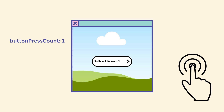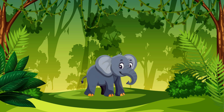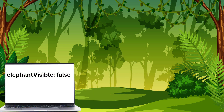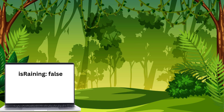Before we look at some code, let's make sure we have a very visual and clear understanding of what State is. Let's imagine we're in a jungle and we want to keep track of something that's going to change within the jungle. Maybe this is whether or not there is an elephant in sight — we could have an elephantVisible state using a boolean: true or false. Perhaps we want to keep track of whether it is raining: we could have isRaining, also true or false. Maybe we want to count the number of parrots we can see — we would use numberOfParrots, which could be 1 or 2.